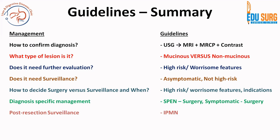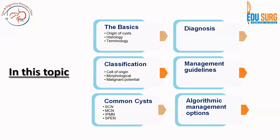To summarize: confirm the diagnosis, identify the type of lesion, mucinous lesions need further evaluation, surgery has specific indications, then perform diagnosis-specific management and post-resection surveillance. This video practically applies all the guidelines to make it simple to determine which guideline to apply when managing a patient or answering exam questions. The entire gamut of pancreatic cystic lesions has been covered; review the series, make notes, and consult the guidelines for more details. Topics like radiomics, proteomics, and molecular markers in cyst fluid analysis are emerging but not yet used routinely.